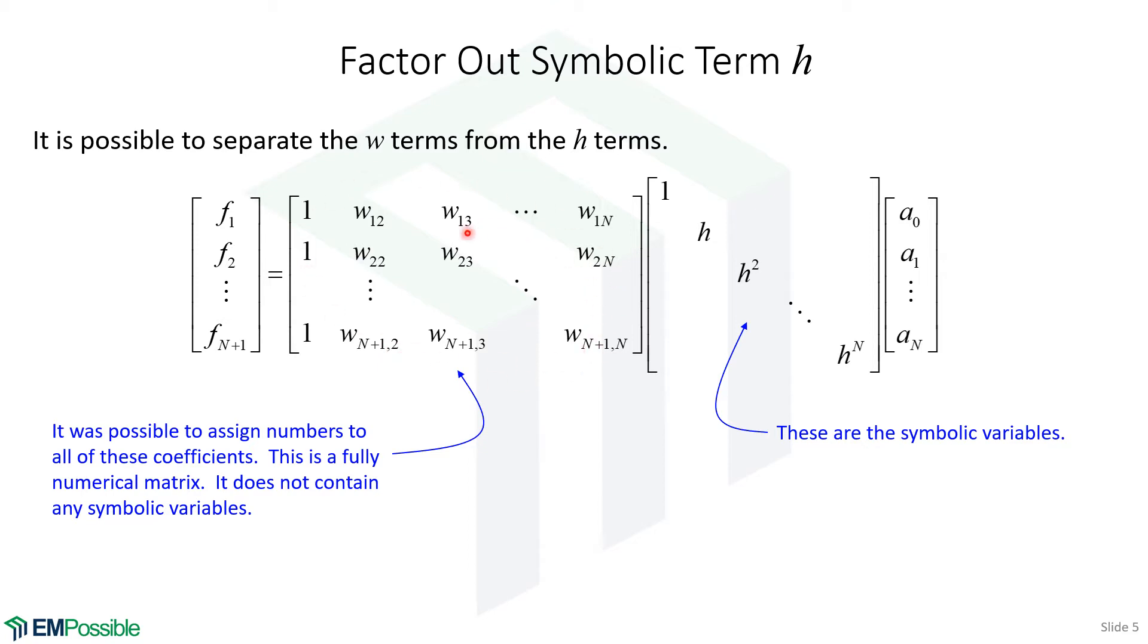This is not the X matrix anymore because we've factored out the H terms. But if we pretend that H equals 1, this matrix will be the X matrix. So that's how we build this. We pretend H is 1 and build the X matrix. In our minds, we track that we're actually post-multiplying by this diagonal matrix that has our H terms. But in MATLAB, all we have to do is process this fully numerical matrix, and that's what makes this possible.